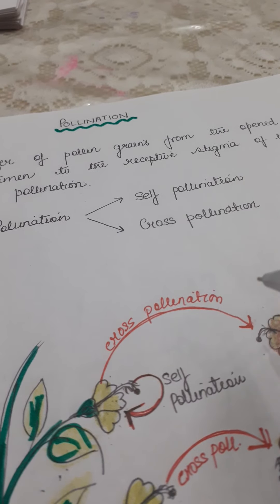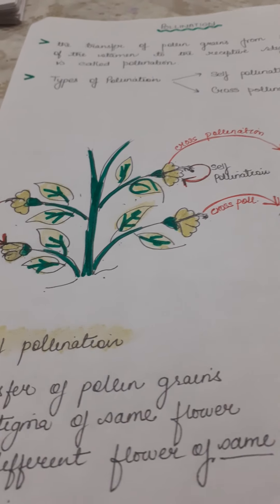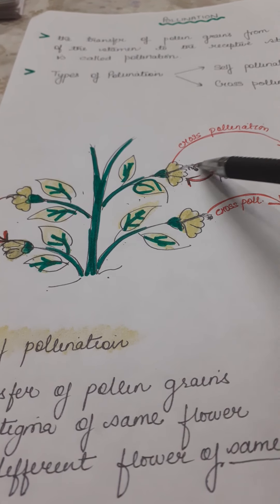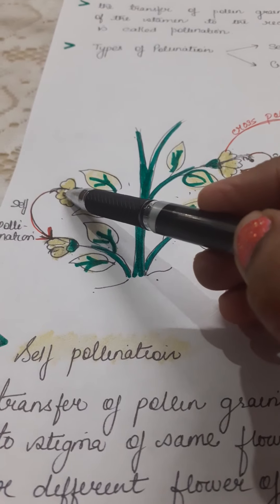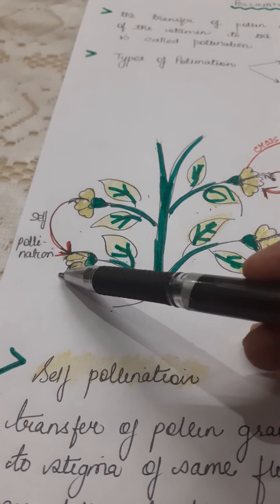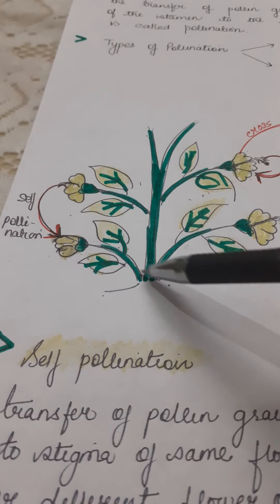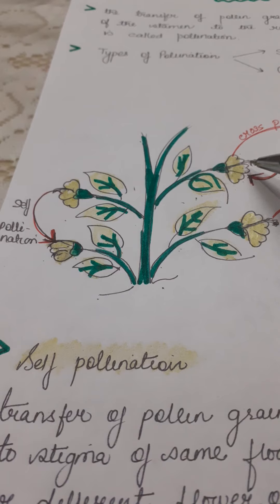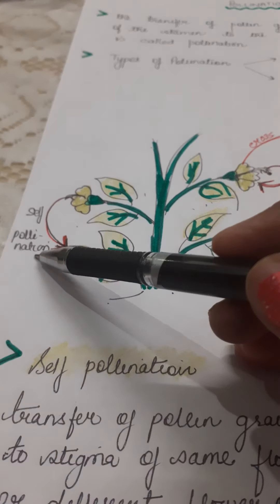Now there are two types of pollination: self-pollination and cross-pollination. When the pollen grains from the anther of one flower fall on the stigma of the same flower, that is self-pollination. Another condition where pollen grains from one flower fall on the stigma of a different flower but of the same plant is also called self-pollination, because all the flowers born on the stems and branches of that plant are genetically similar. So whether pollen grains are transferred to the stigma of the same flower or a different flower of the same plant, it is designated as self-pollination.